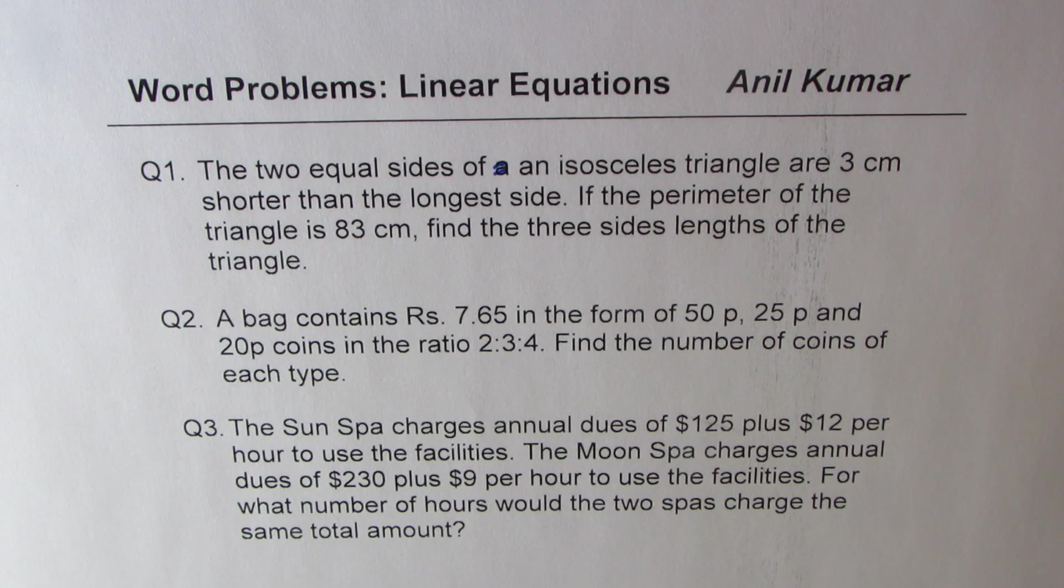Question number two. A bag contains rupees 7.65 in the form of 50 paisa, 25 paisa, and 20 paisa coins in the ratio of 2:3:4. Find the number of coins of each type.